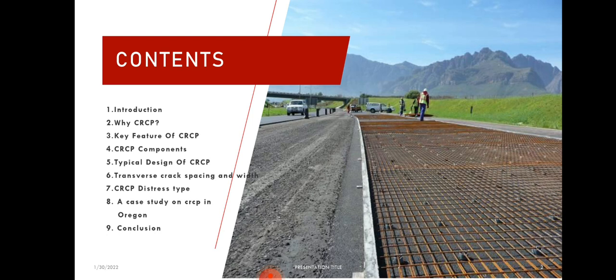Let's start with the first slide, which consists of the list of contents. I am going to elaborate the introduction of the CRCP — what is CRCP — then why CRCP is so important to be constructed. Then I am going to tell you some key features of the CRCP. The next slide contains the CRCP components; there are two main components of the CRCP which are concrete and steel. Then the next slide is a typical design of CRCP, in which I am going to tell you about some design features. Then the next slide is transverse crack spacing and width. The CRCP consists of transverse cracks which are held by aggregate interlocking, which helps in the load transfer mechanism — this is the most important phenomenon of the CRCP.